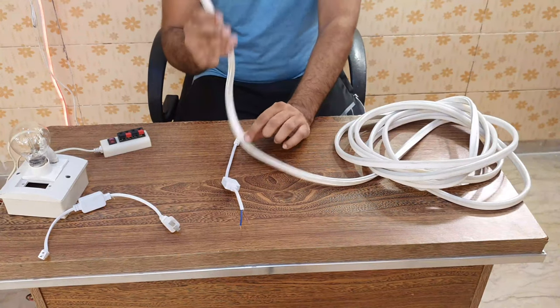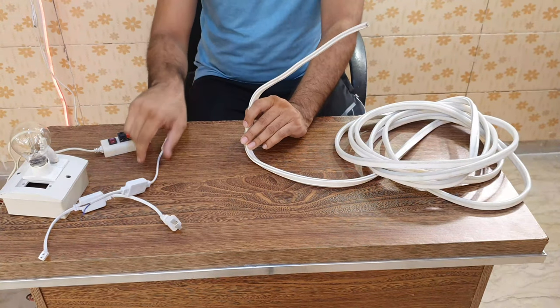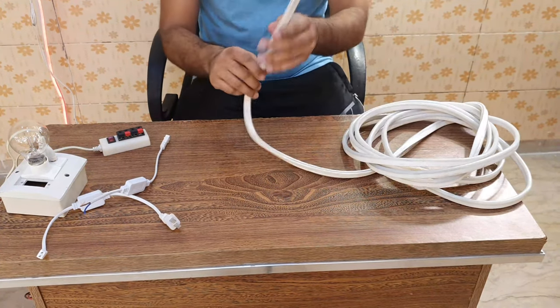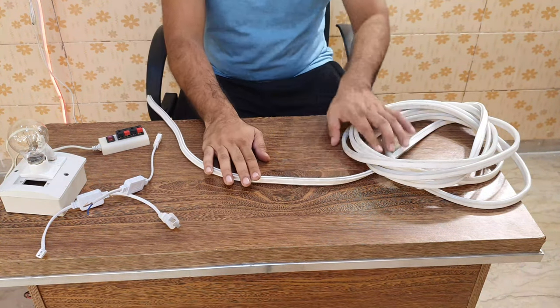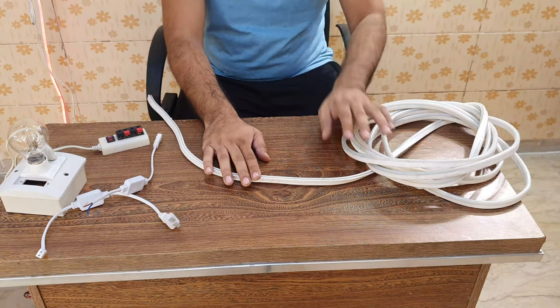First, I will teach you cutting and then we will put a connector. You have seen that the rob light and neon lights are based on the meter. After each meter, there is a cutting option.